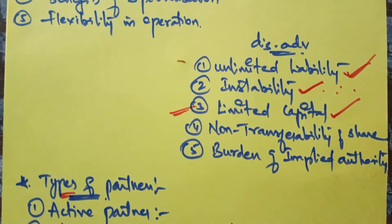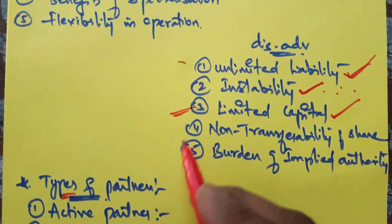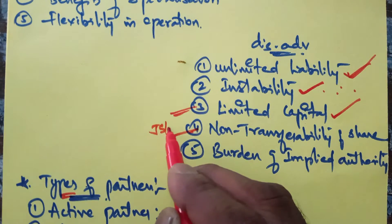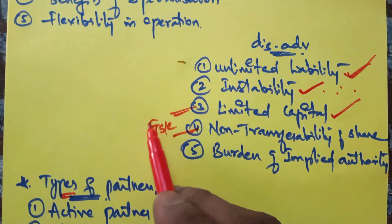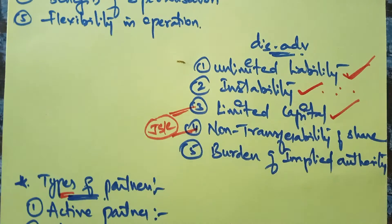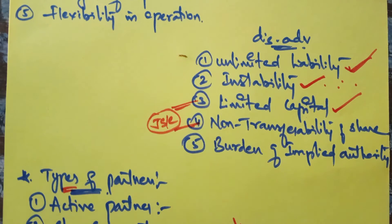Another disadvantage is that no partner can transfer his share without the consent of the other partners. This is a disadvantage compared to a joint stock company, where every shareholder is free to transfer their shares without bringing it to the notice of the company. But in partnership, transfer is only possible with the consent of all other partners.